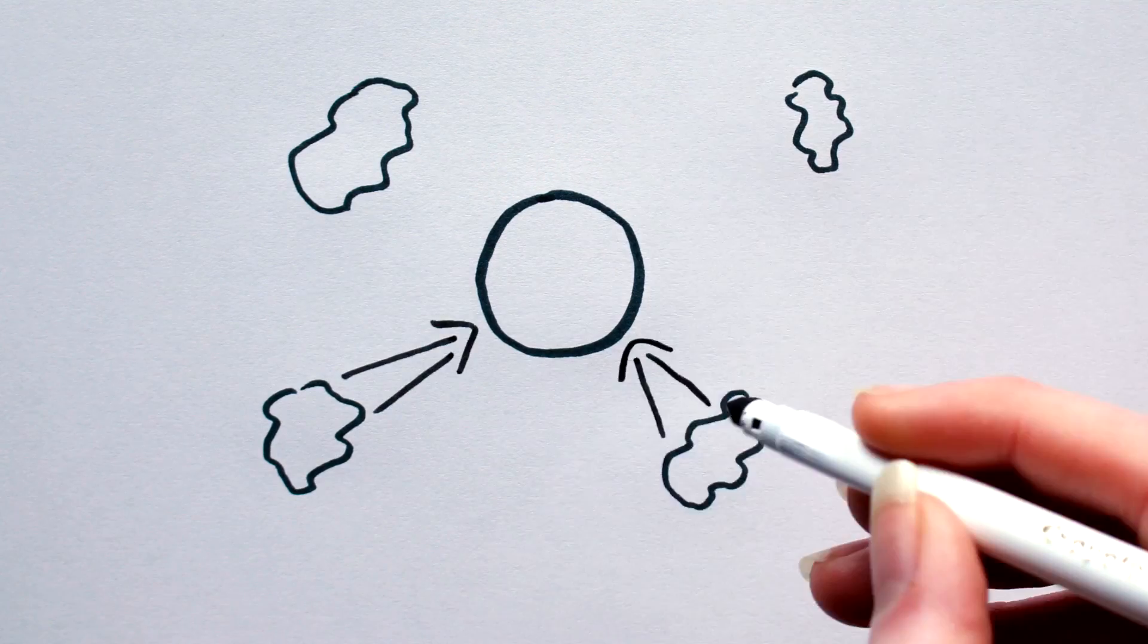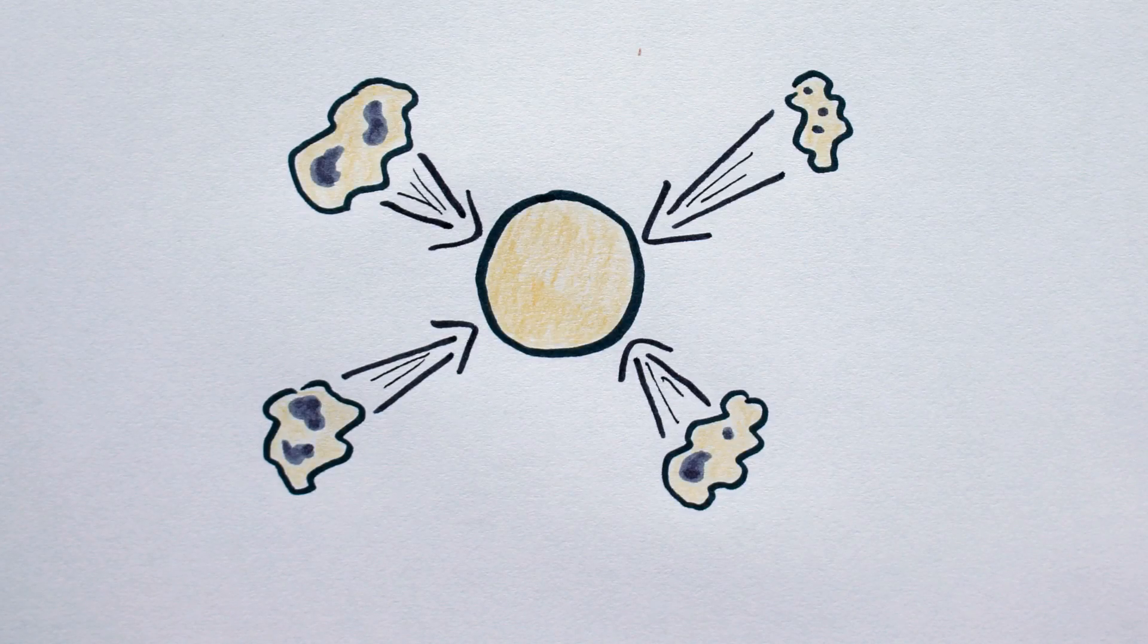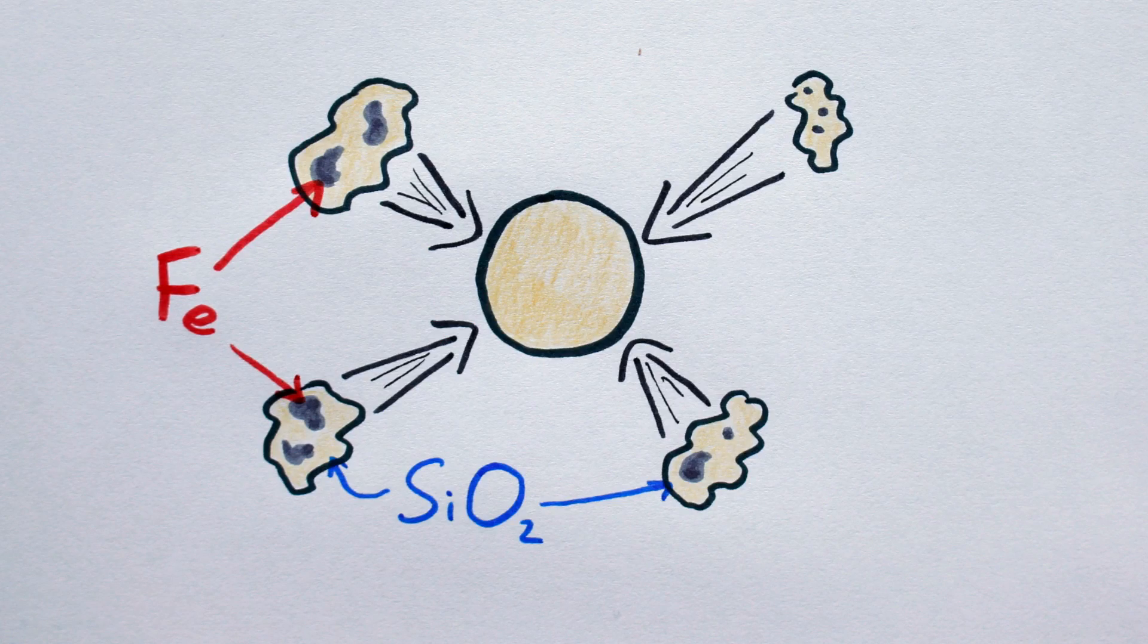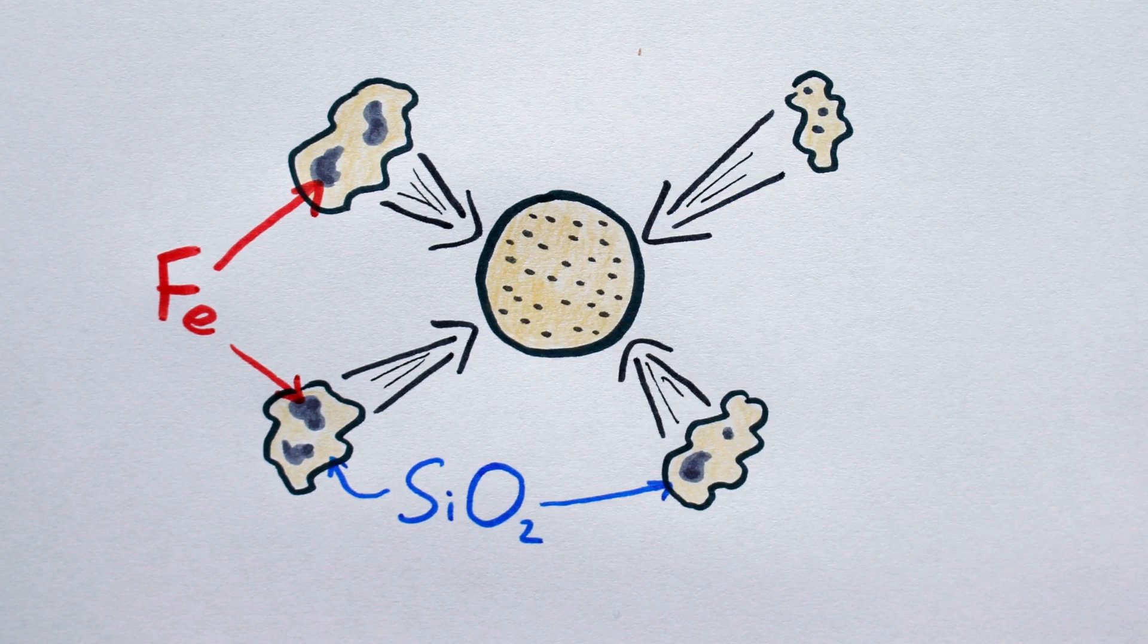One way such a coreless, rock-type pokeplanet could form is if it accretes from material where all the metallic iron is bound into the silicate mineral crystals. This would stop the inside of the planet differentiating and forming an iron core. Instead, the iron would be trapped and dispersed throughout the giant mantle.